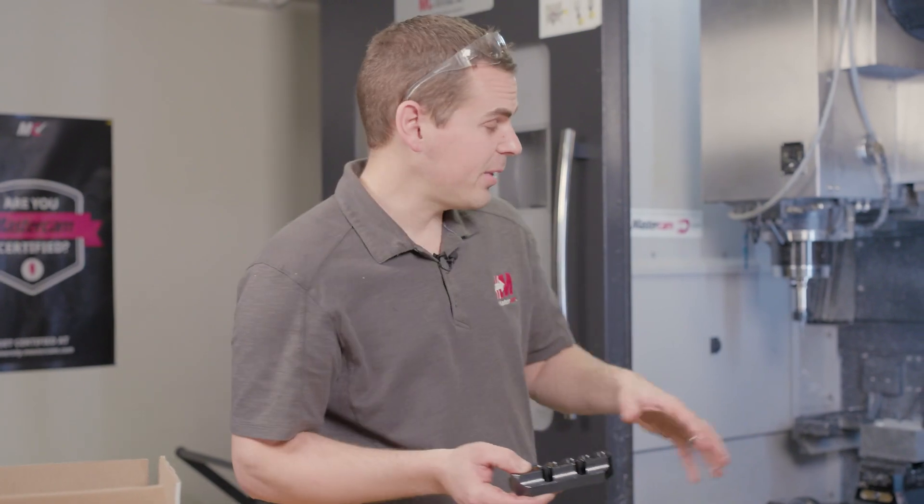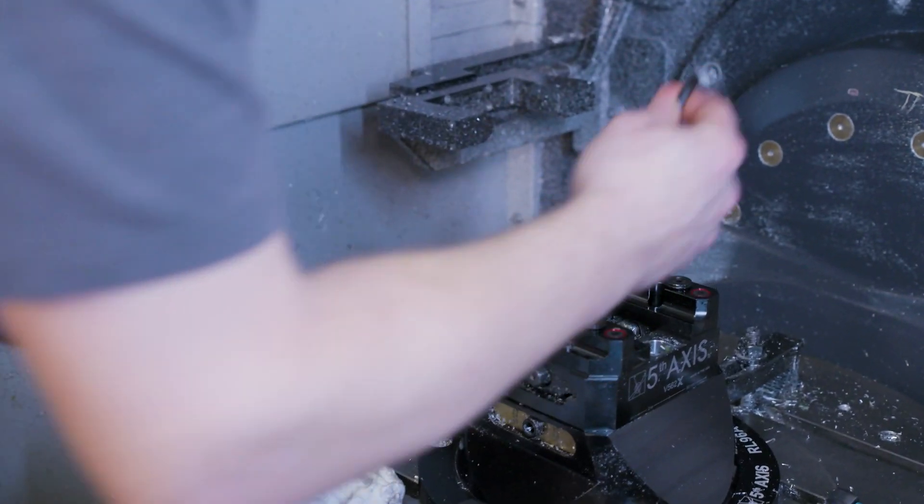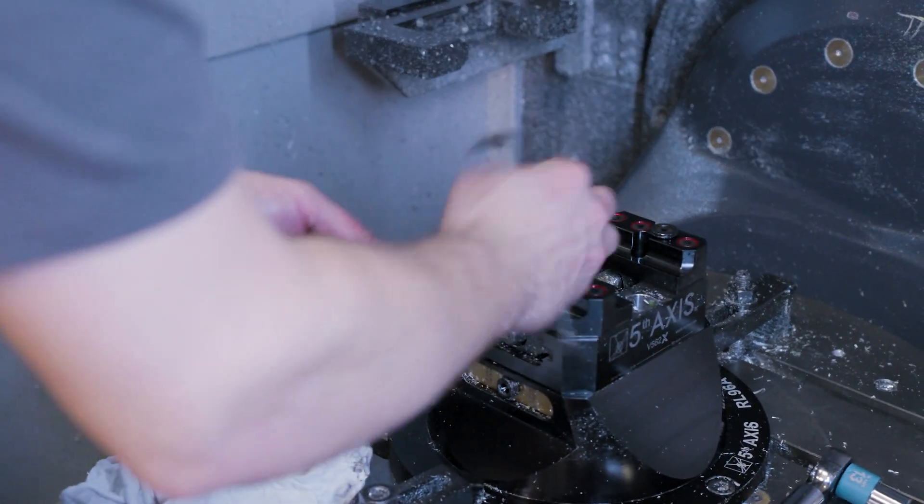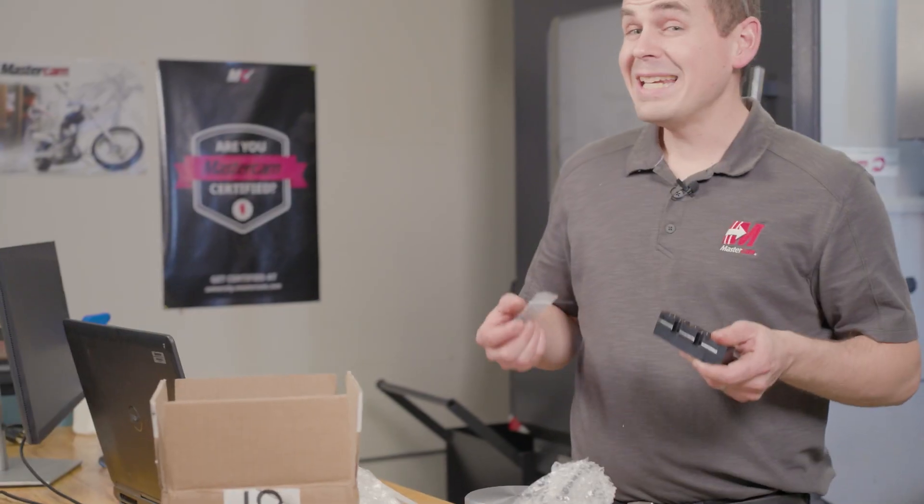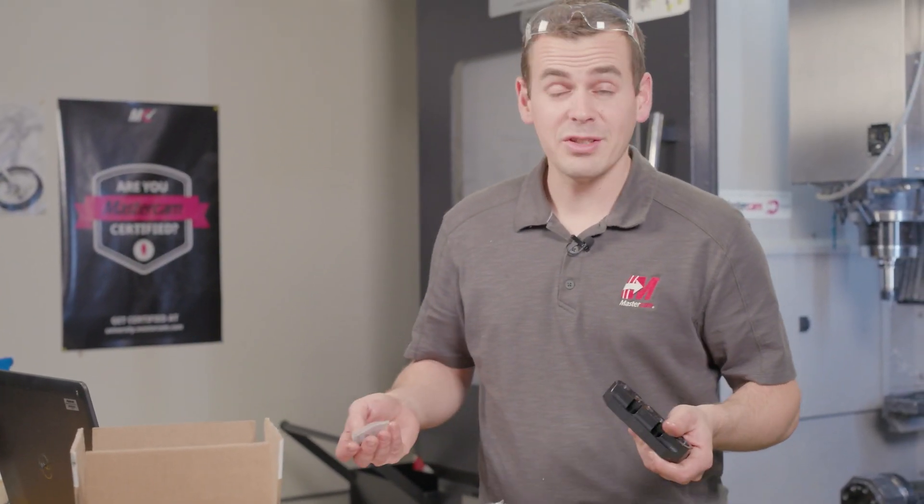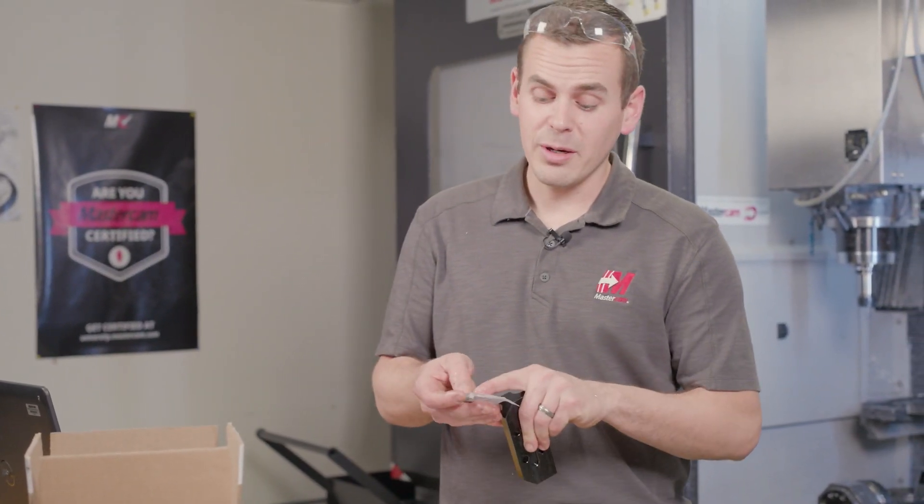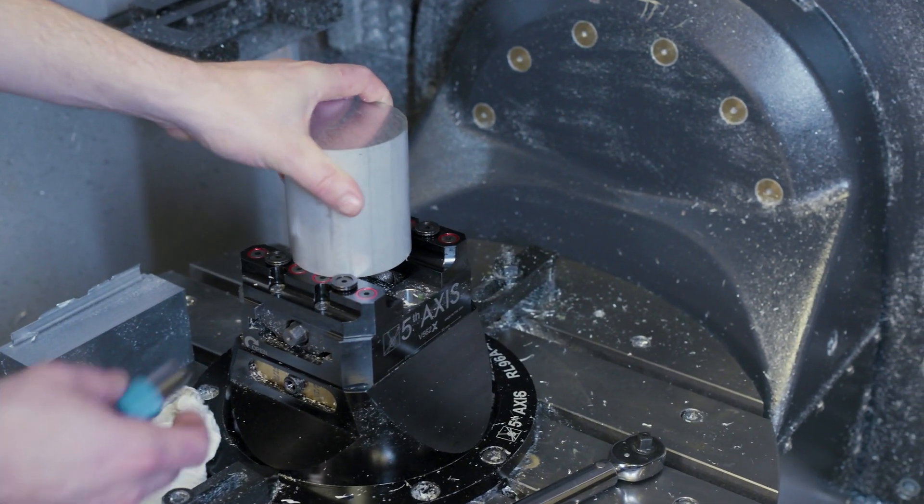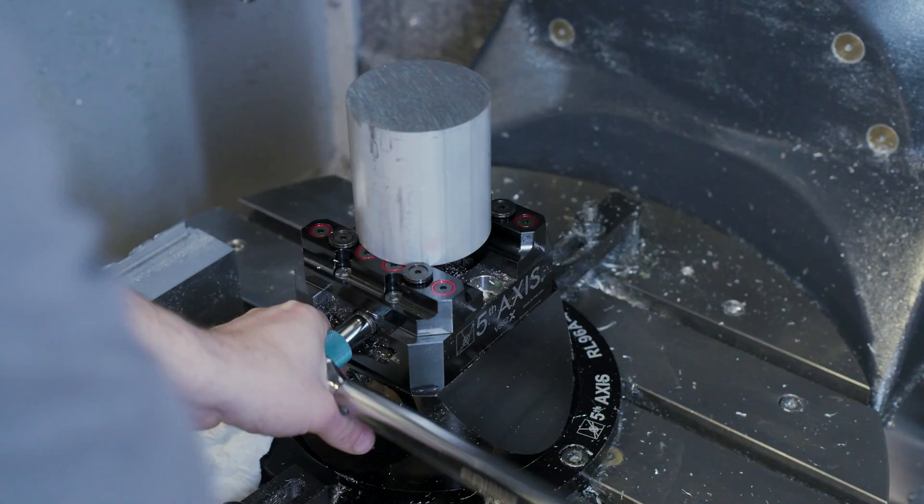So these bolt on right in place of your standard jaws. The little button inserts go in top of there and those grip right onto the material. You don't even need to prep that material if it's under 35 Rockwell. These grippers will grab right into the part and hold for a nice secure chatter-free cutting experience.